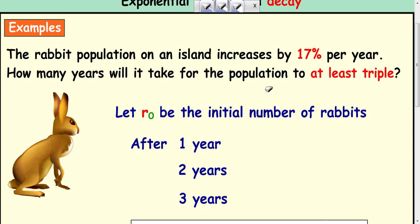After one year the rabbits are increasing by 17%. So if it's increasing by 17% you're really multiplying by 1.17. So we can say at the end of year one then the initial population is multiplied by 1.17 to get the rabbits now.